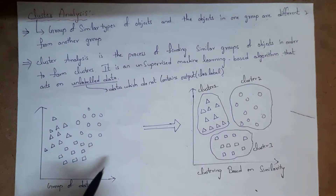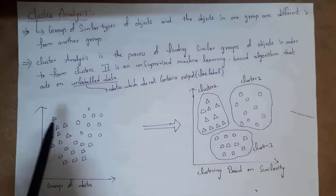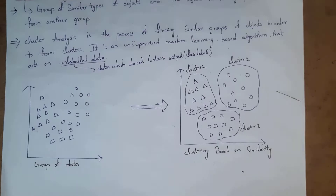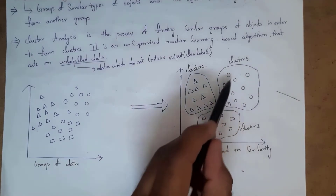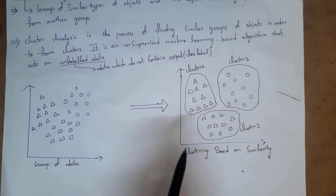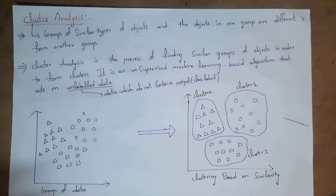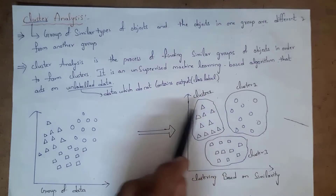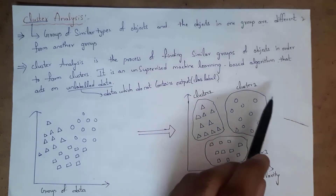Consider this example: this is a group of data and we need to perform cluster analysis on this dataset. There are three types of objects — triangular objects, circular objects, and square objects — so it forms three clusters. Triangular objects are placed in one cluster, circular objects in another, and square objects in another. The objects in one group are different from another group, so cluster one contains only triangular objects and cluster two contains only circular objects.